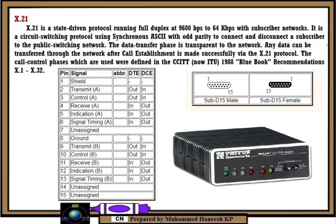When X.21 is used with version 1.1, it provides synchronous data transmission at rates from 600 bps to 10 Mbps. There is also a variant of X.21 that is only used in select legacy applications, referred to as circuit switched X.21.